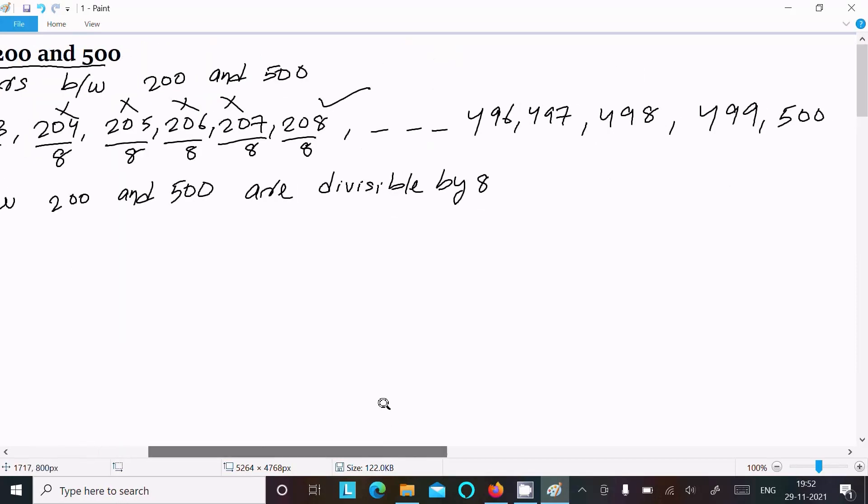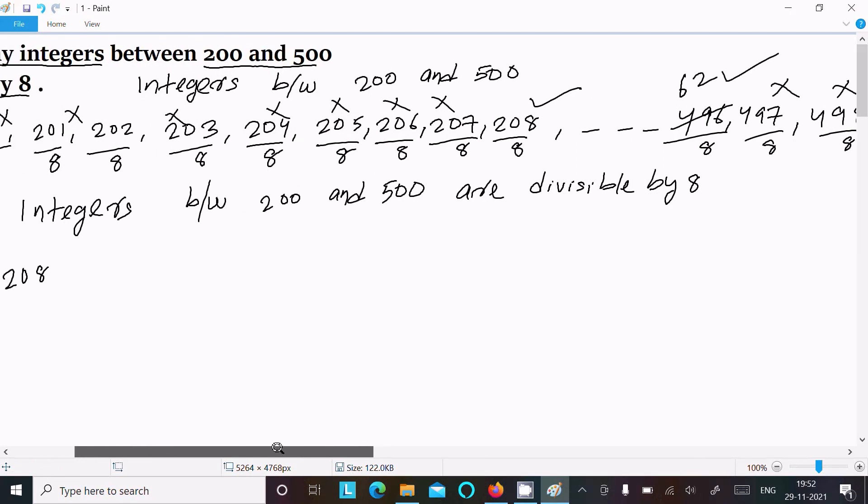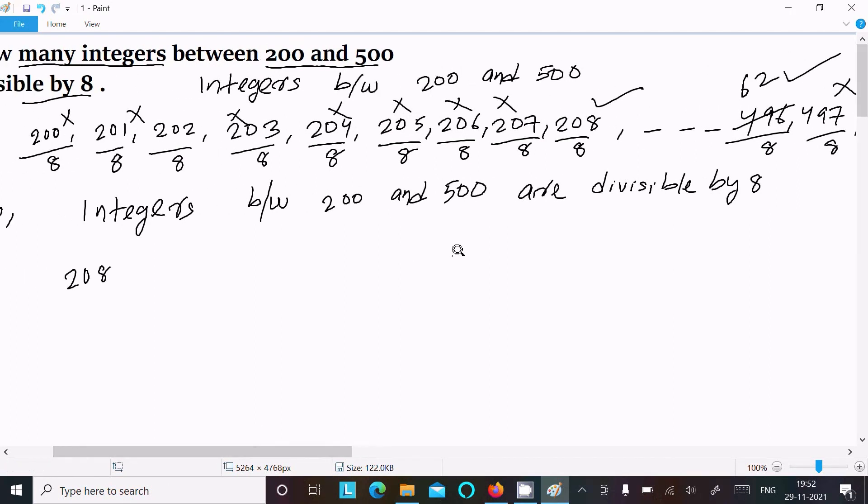Now this, if you try to divide, then it cancels 6 times 48 and 2. So this is divisible. This is not divisible, all not divisible. So first number that I found is 208, and here the last number is 496.